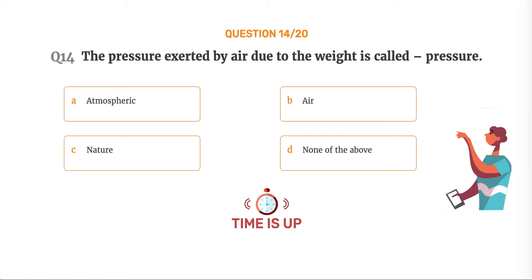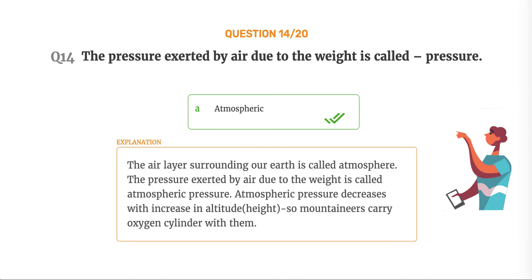The correct answer is Option A: Atmospheric. The air layer surrounding our earth is called atmosphere. The pressure exerted by air due to its weight is called atmospheric pressure. Atmospheric pressure decreases with increase in altitude, so mountaineers carry oxygen cylinders with them.